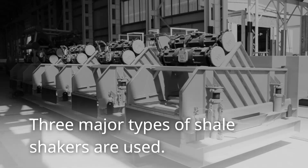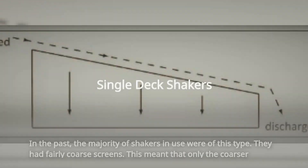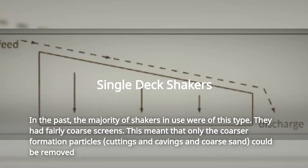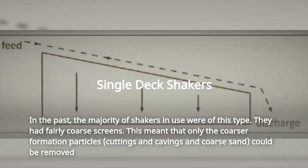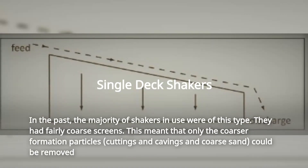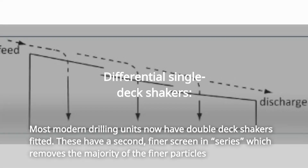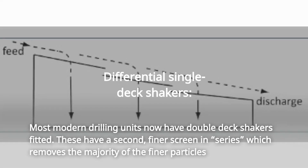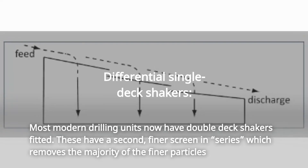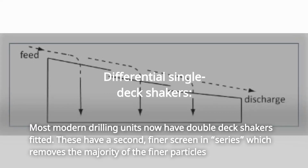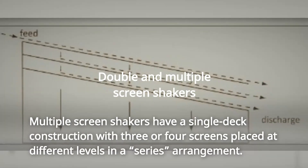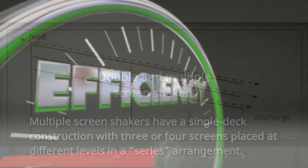Three major types of shale shakers are used. In the past, the majority of shakers in use had fairly coarse screens, meaning only the coarser formation particles — cuttings, cavings, and coarse sand — could be removed. Most modern drilling units now have double-deck shakers fitted, which have a second, finer screen in series to remove the majority of finer particles. Multiple screen shakers have a single-deck construction with three or four screens placed at different levels in a series arrangement.